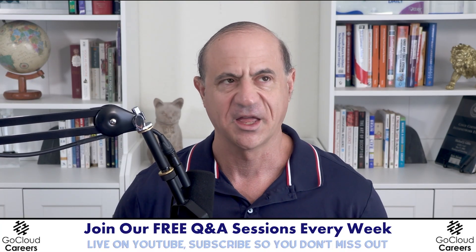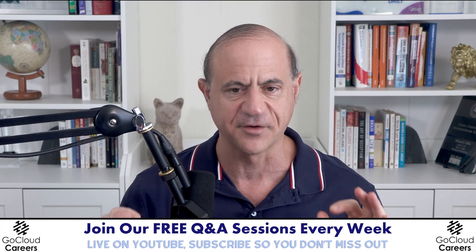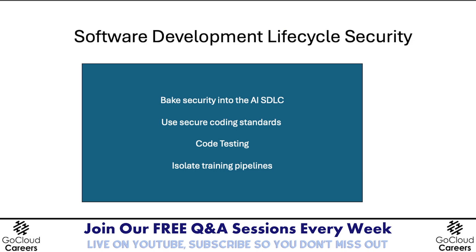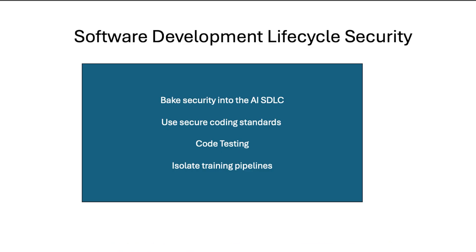Now let's talk about the software development lifecycle for AI security. In any architecture, we need to make sure that software is secure by design. Secure SDLC means putting security into the entire software development process — using secure coding standards, ensuring the team follows them, and doing code testing: static testing, dynamic testing, and other forms of testing. If we have various training pipelines, we want to isolate those pipelines to make sure they don't contaminate anything.